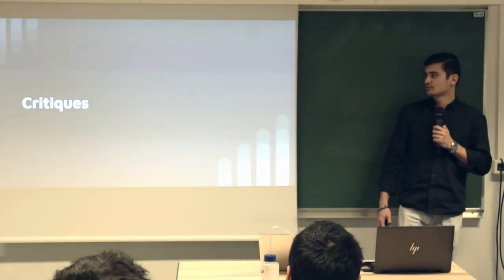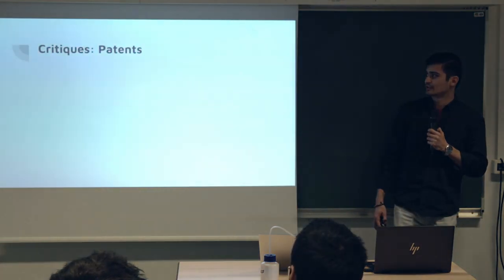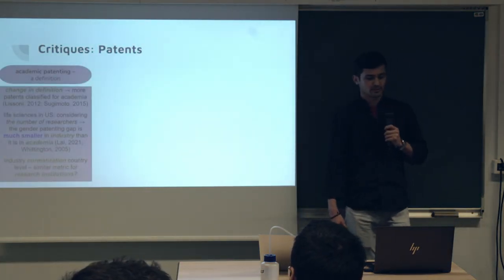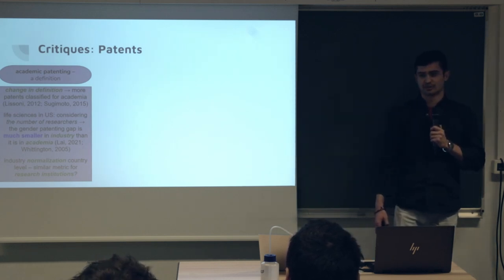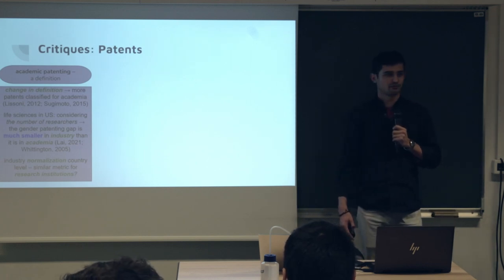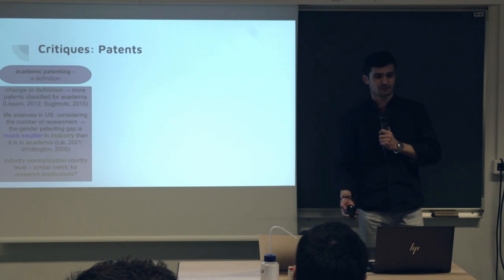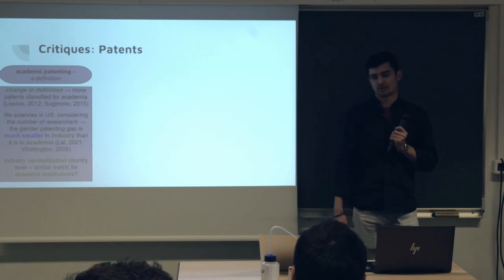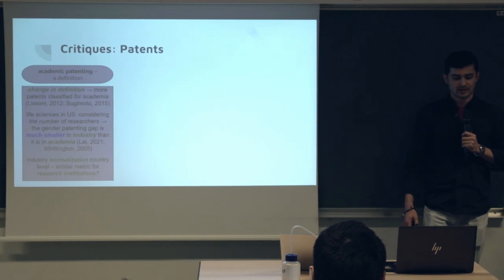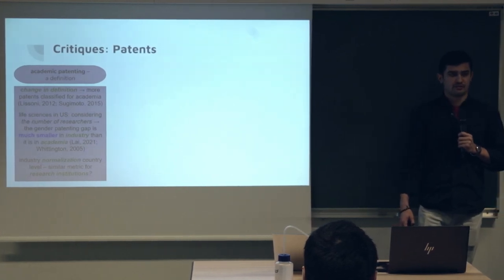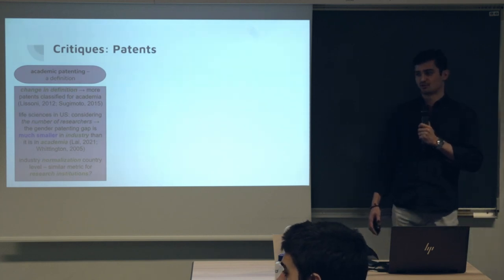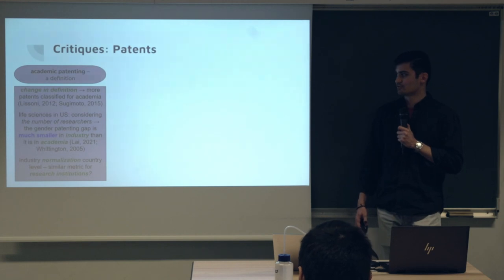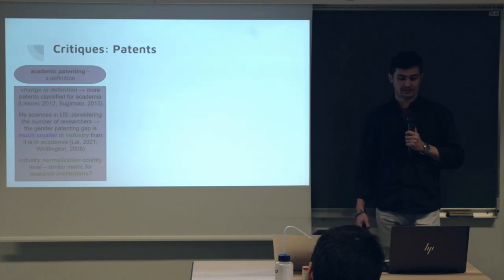Moving to critiques, starting with critiques of patenting: there is a lot to be done in academic patenting definition because the literature does not converge on one definition. For example, the paper uses a definition of the first applicant and classifies this into research institution or otherwise industry or companies. But changing the definition — looking at the whole number of applicants and distributing the classification equally — would give many more patents attributed to academia.